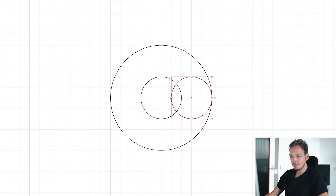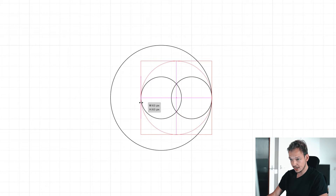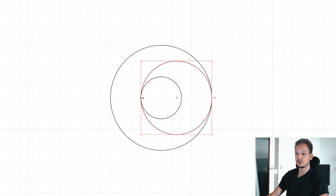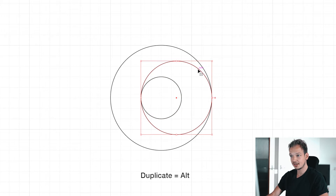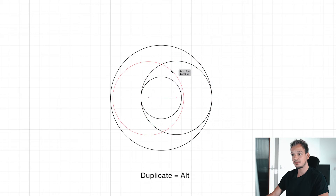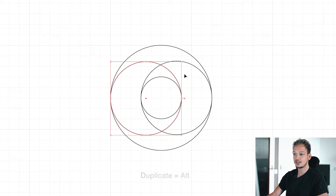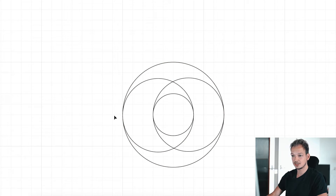Now we are going to make this circle bigger and drag it to the left side of the inner circle. After that, duplicate this circle again to the left side of the outer circle.